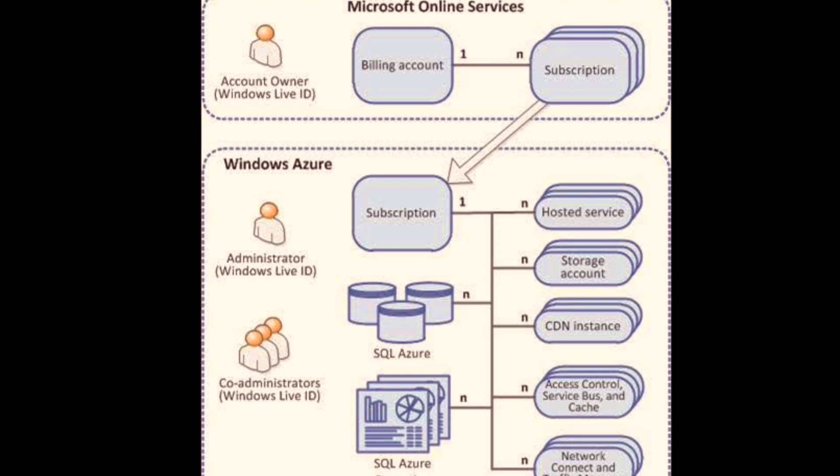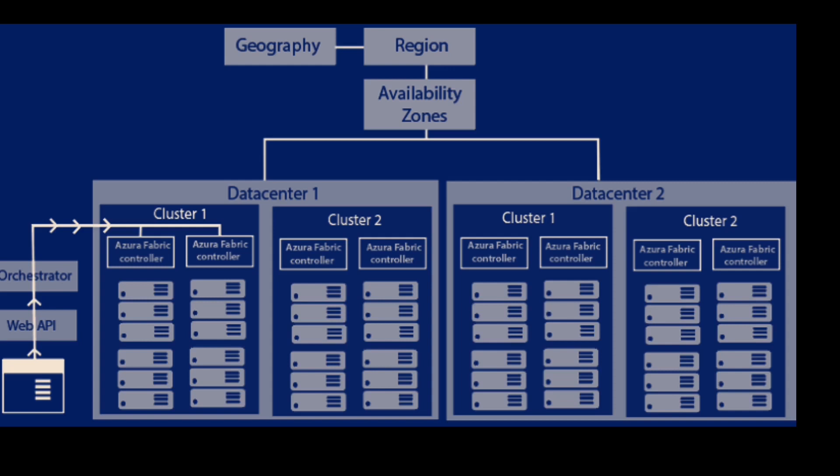There are 10 more options to check. The next graph covers geography, region availability zones. Let's understand: data center 1 and data center 2 — you must follow data center 1 and then data center 2. There are incredible things in data center 2, including Azure Fabric Controller 1 through 9.